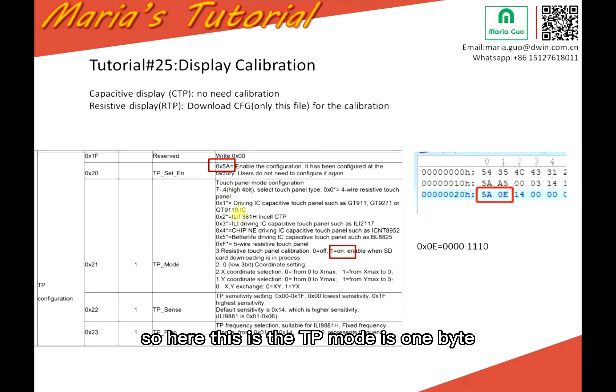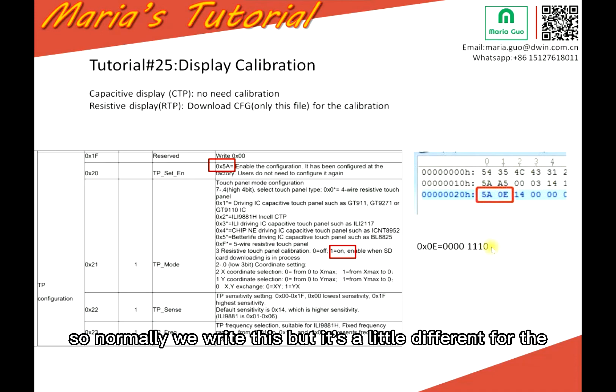And 21, so here this is the TP mode. This is the TP mode is 1 byte. The most important thing is that for the resistive touch panel calibration, here you should write select 1. 1 means on. And here, this is 21. We write 0E, 0E. This is the hex format. But if you transfer to BIM mode, 0E means 0E, 0E, 0E, 0E, 0E and 1, 1, 1, 1 there. So normally we write this.